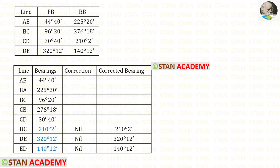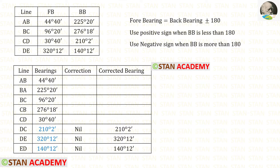Now let us make two more columns. The first additional column will have the correction, and the second additional column will have the corrected bearings. We know that these three readings are correct, so no correction is required. We can enter them in the corrected bearings directly. We know that in these three readings there is no error.